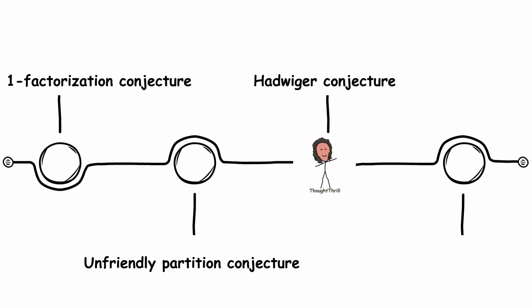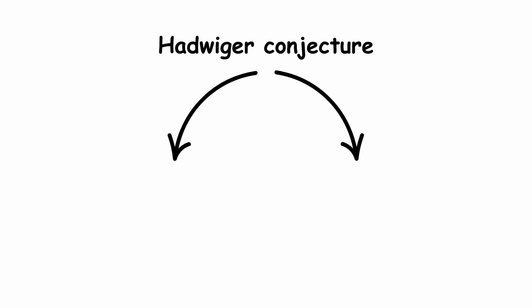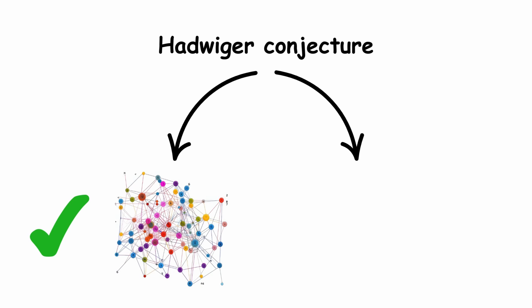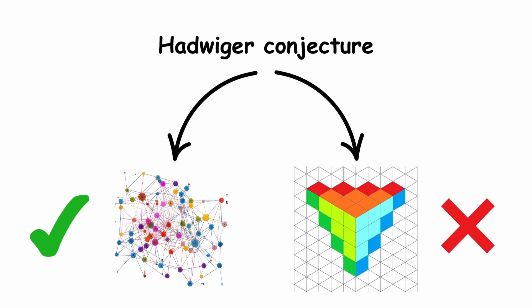Hadwiger Conjecture. The Hadwiger Conjecture is a conjecture in graph theory, not to be confused with the Hadwiger Conjecture in combinatorial geometry covered previously. Let's start with colorings.